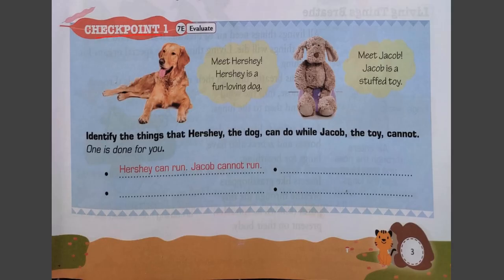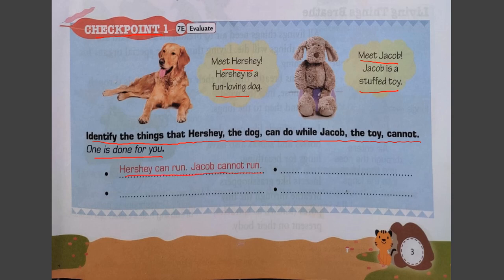Now we have Checkpoint 1. Meet Hershey, a fun-loving dog, and meet Jacob, a stuffed toy. Identify things that Hershey the dog can do but Jacob the toy cannot. Hershey can run whereas Jacob cannot. Hershey can eat, breathe, and play whereas Jacob cannot, because Hershey is a living thing and Jacob is a non-living thing.